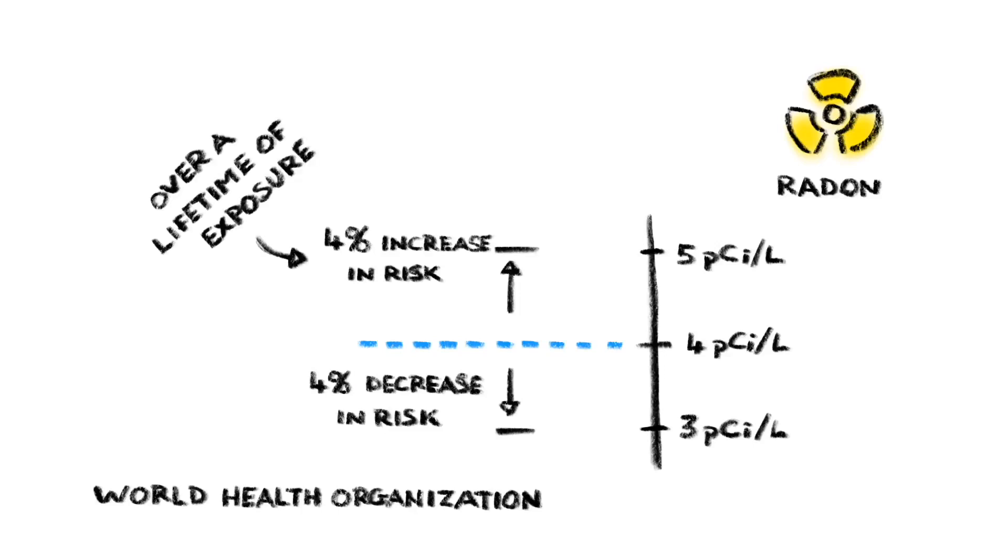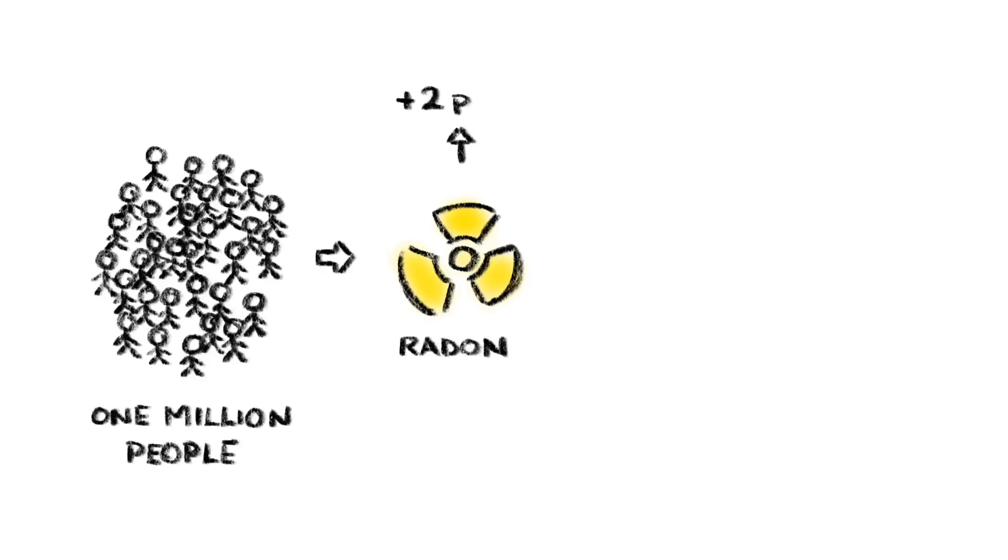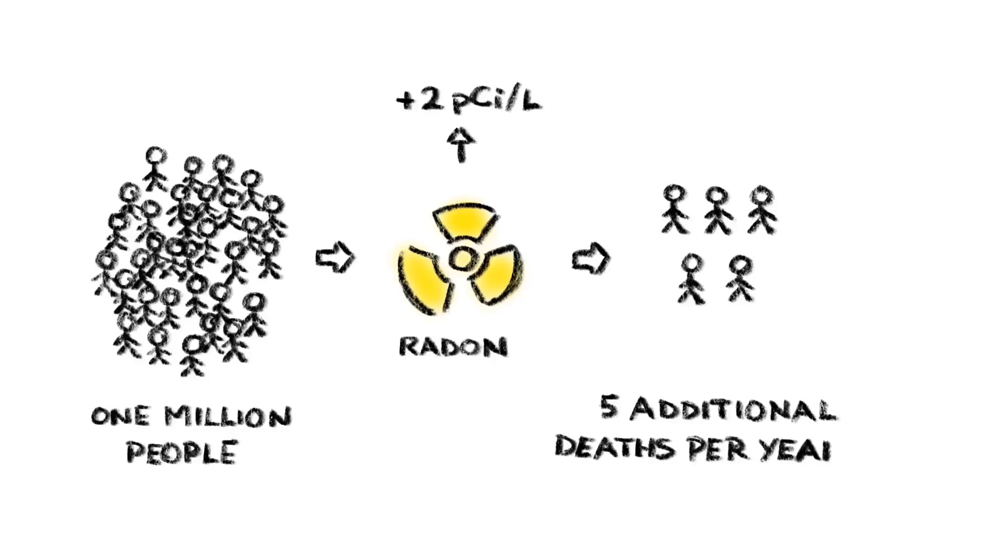A few days or weeks inhaling high levels of radon isn't that risky. It's the day-in, day-out exposure over tens of years that's important. Using this estimate of risk versus exposure, it turns out that if the average exposure level for radon was increased by 2 picocuries per liter across the United States, we'd expect something like 5 additional radon-related deaths per million people each year.